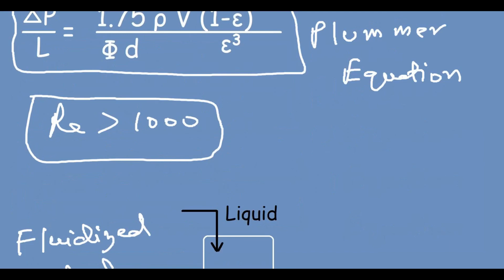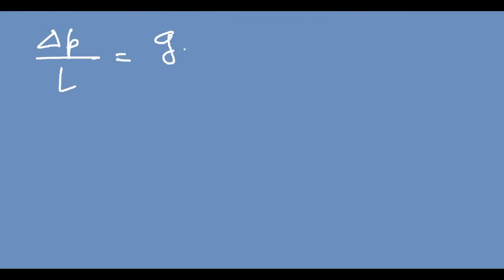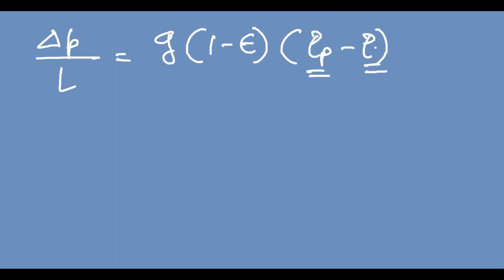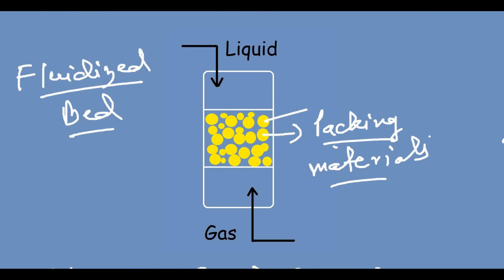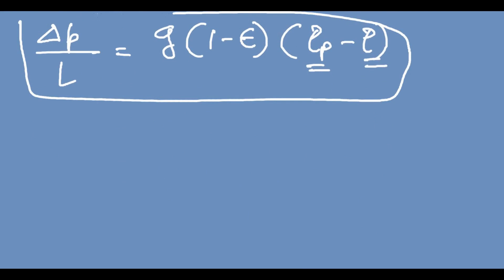During fluidization, the pressure drop equation also changes. Instead of the Ergun equation, we use: ΔP/L = g(1 − ε)(ρp − ρ), where ε is the bed porosity, ρp is the density of the particle (the packing material), and ρ is the density of the fluid. This equation is used during fluidization.